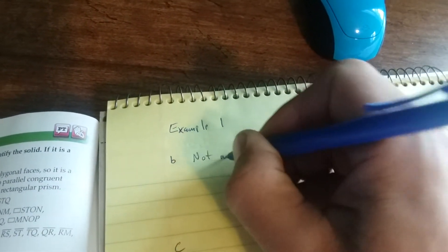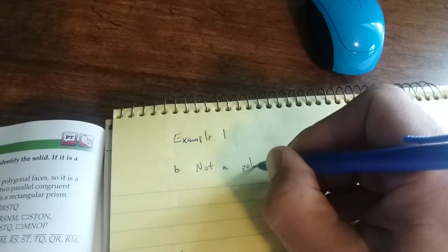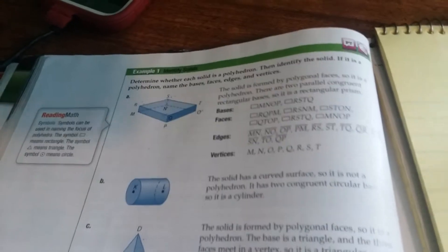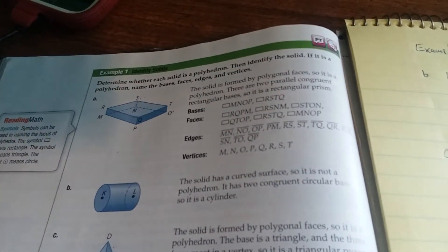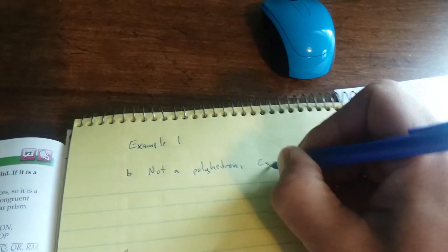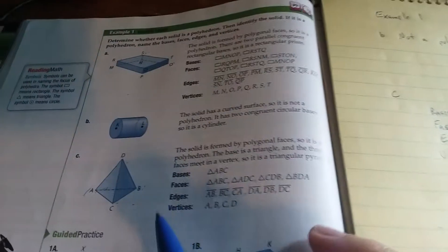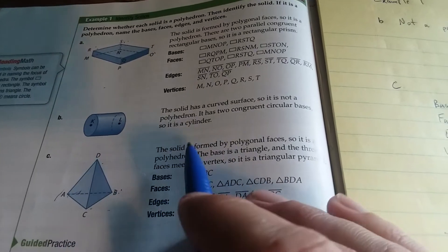two curved surfaces, not a polyhedron. We call this three-dimensional figure a cylinder. Let's look at our next example.